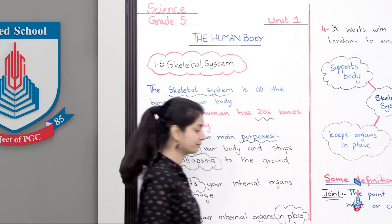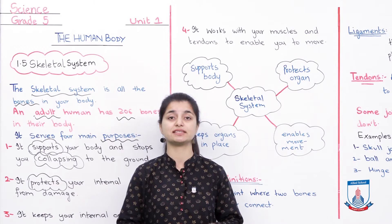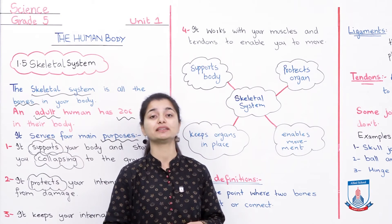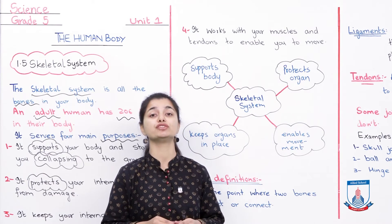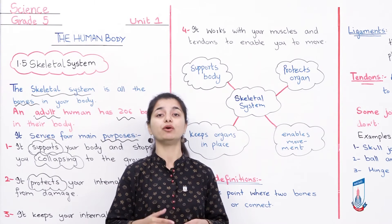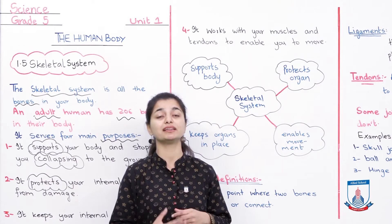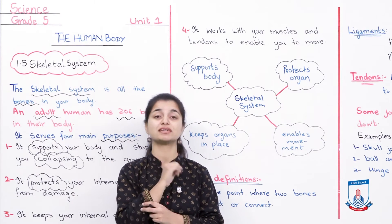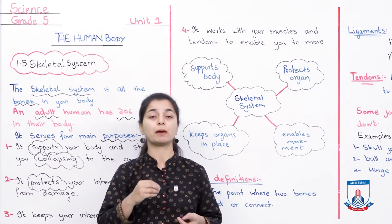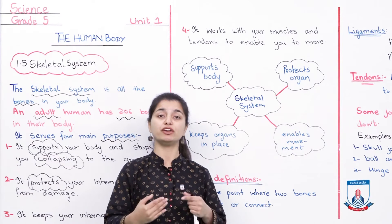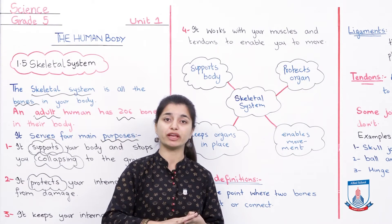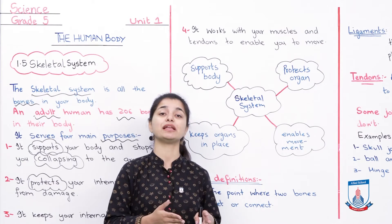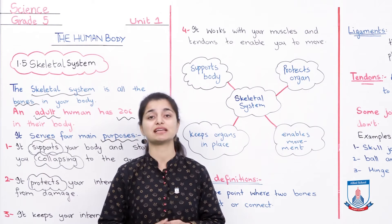The fourth purpose: it works with your muscles and tendons to enable you to move. Tendons, as we discussed in the last lecture, are tissues that connect muscles to bones. The skeletal system plays a role in your body's movement — if I move my hands, the bones also move. When I'm sitting, the bones are bent; when I'm standing, they are straight. So the skeletal system works with muscles and tendons to enable movement.